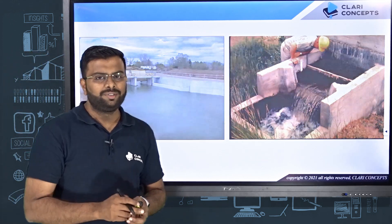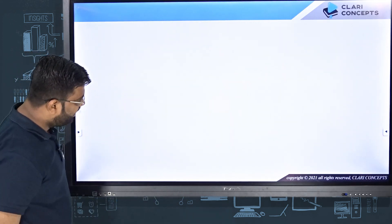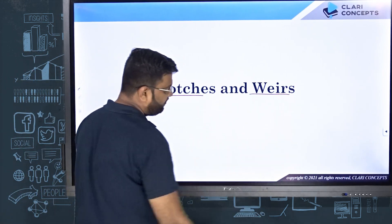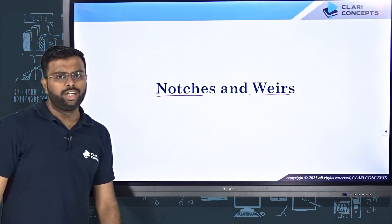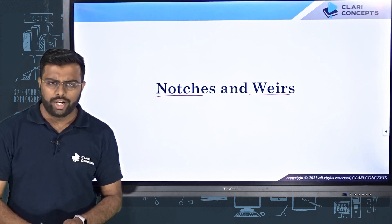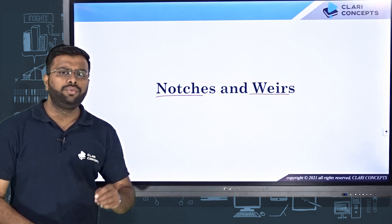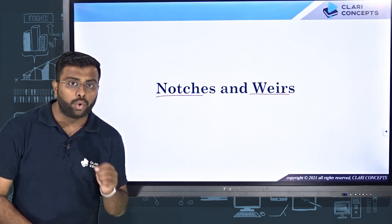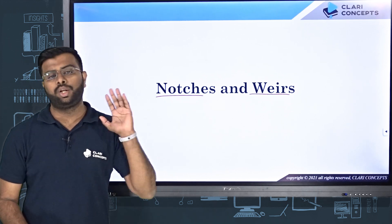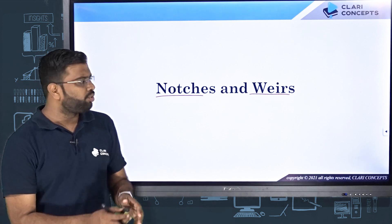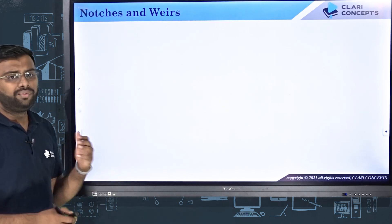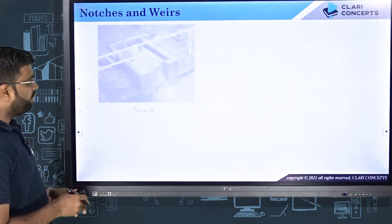The answer is notches and weirs. These are the two devices with which you can measure the flow rate of water flowing through open water bodies like canals and rivers. Let me show you pictures of these and explain how flow rate is measured using them.